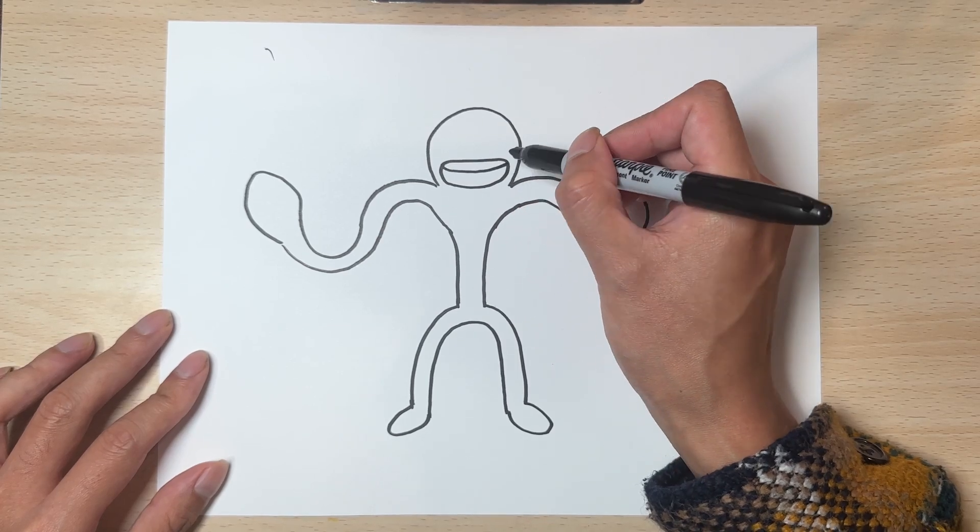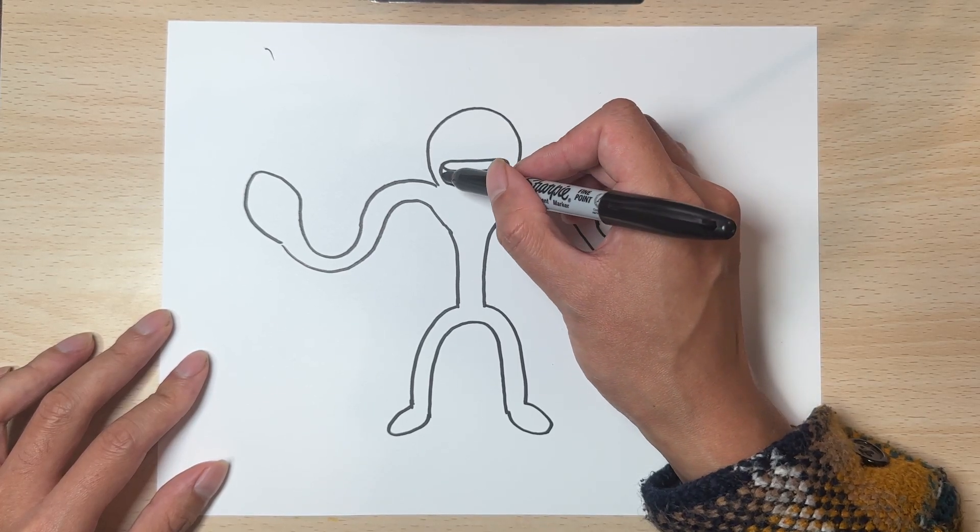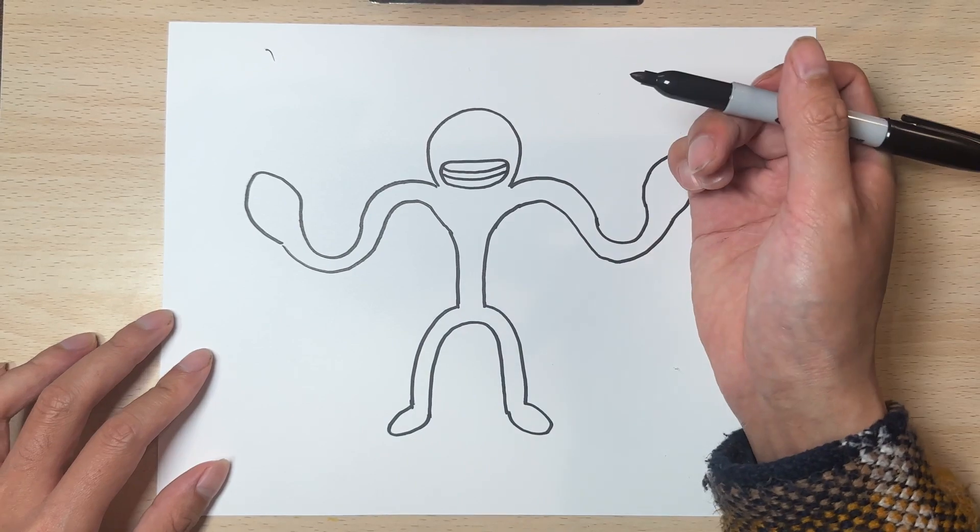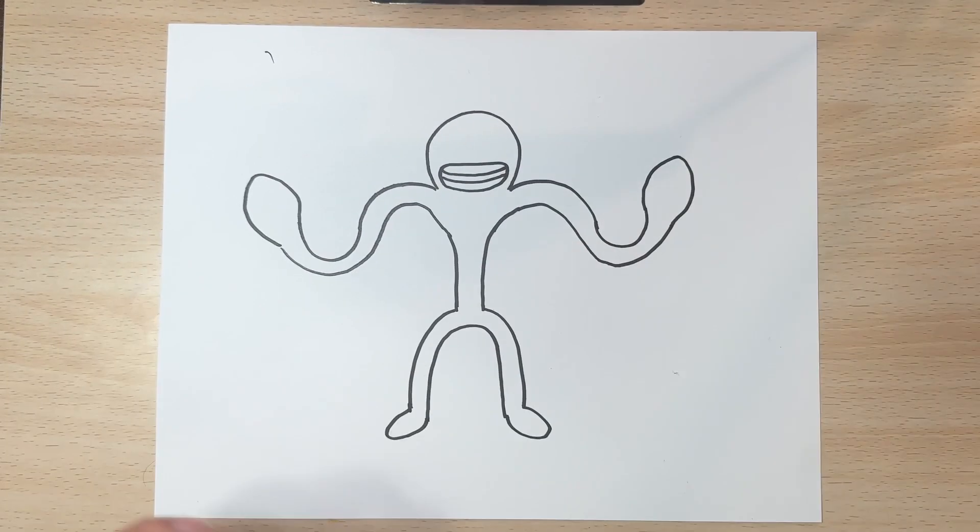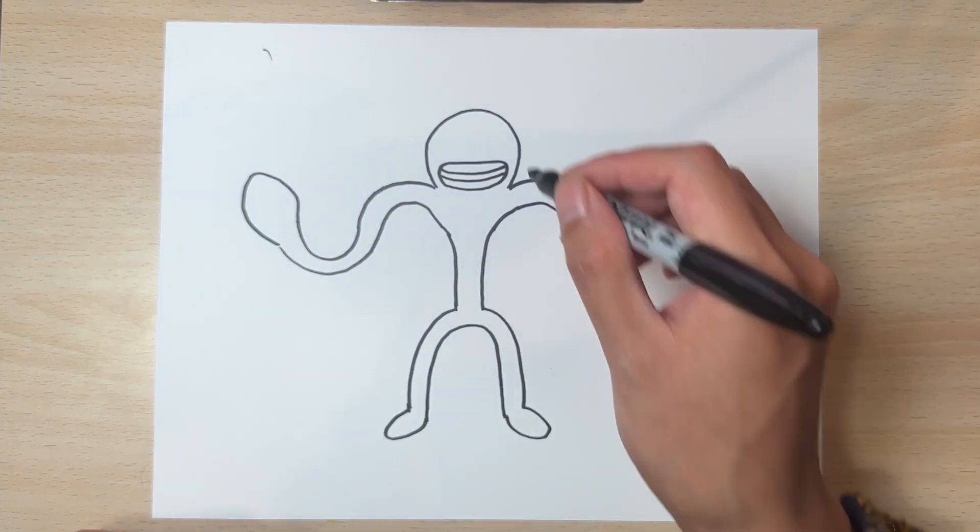And then teeth, row of teeth on the top and row of teeth on the bottom. And Lojo doesn't have any eyes so we don't need any eyes on him.